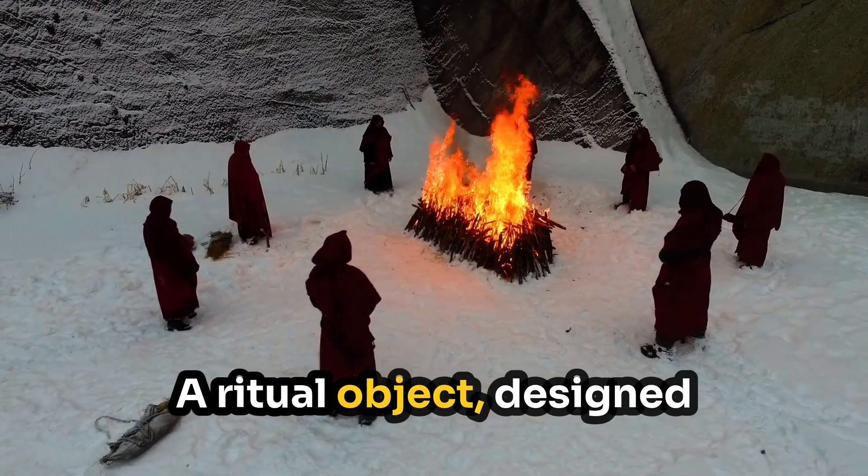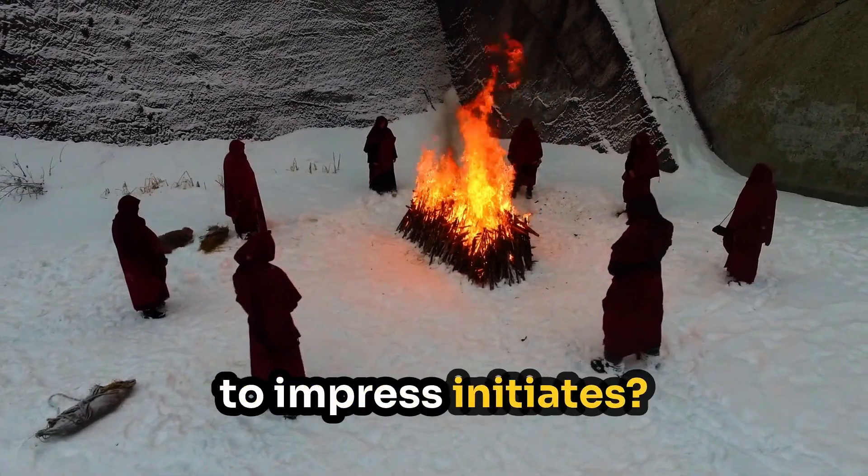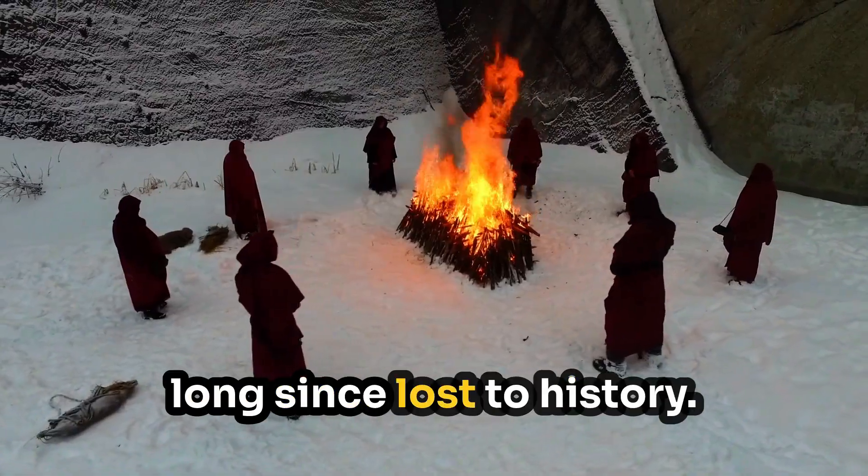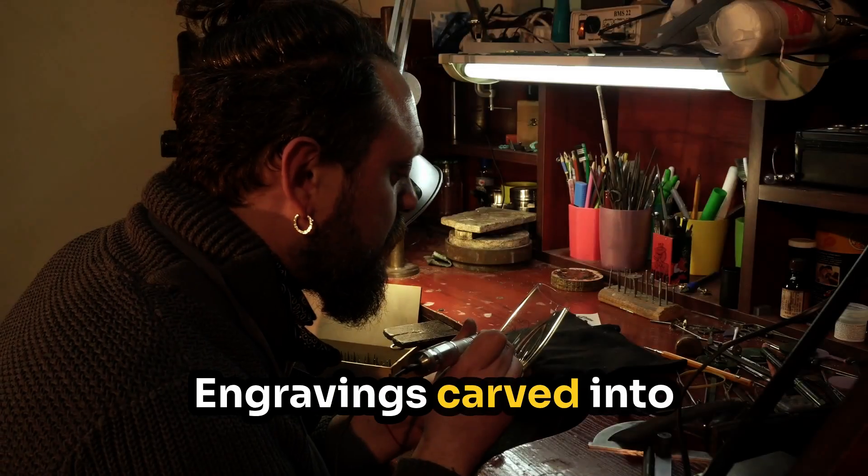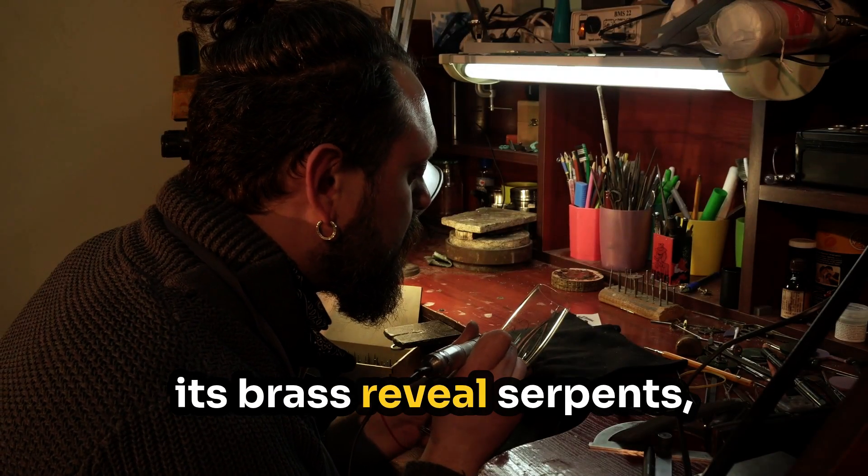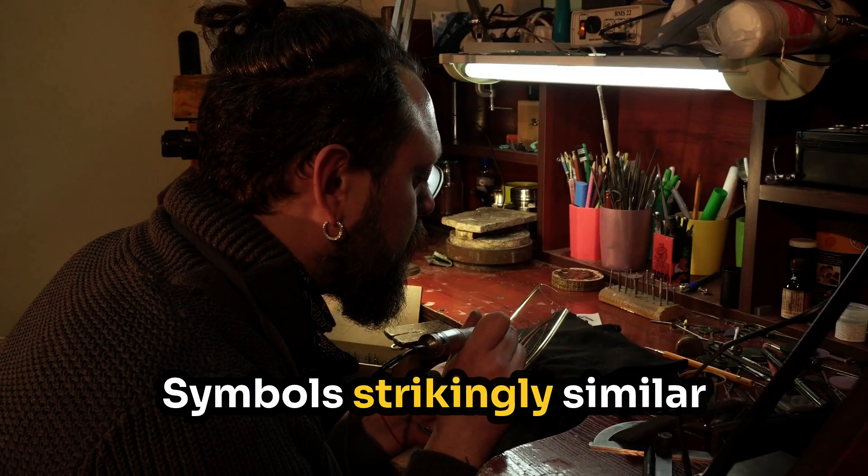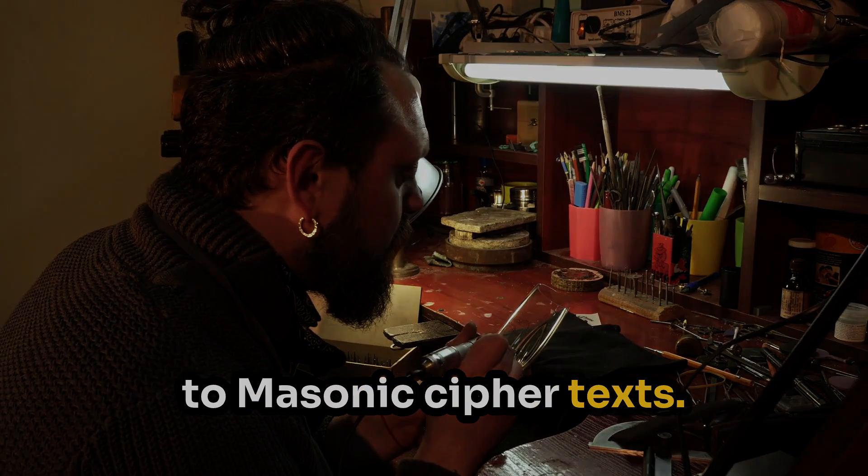What was it meant for? Navigation across impossible terrain? A ritual object designed to impress initiates? Perhaps a communication device, tuned to signals long since lost to history. Engravings carved into its brass reveal serpents, numerals, and sigils, symbols strikingly similar to Masonic ciphertexts.